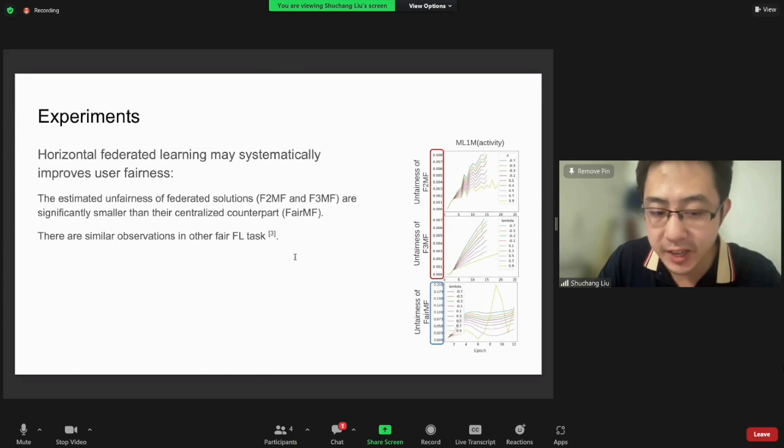An extra observation in our experiments is that the federated solution, even without fairness control, might still achieve significantly better user group fairness compared to the centralized solution. This phenomenon has also been observed in other fairness-aware federated learning tasks as well.